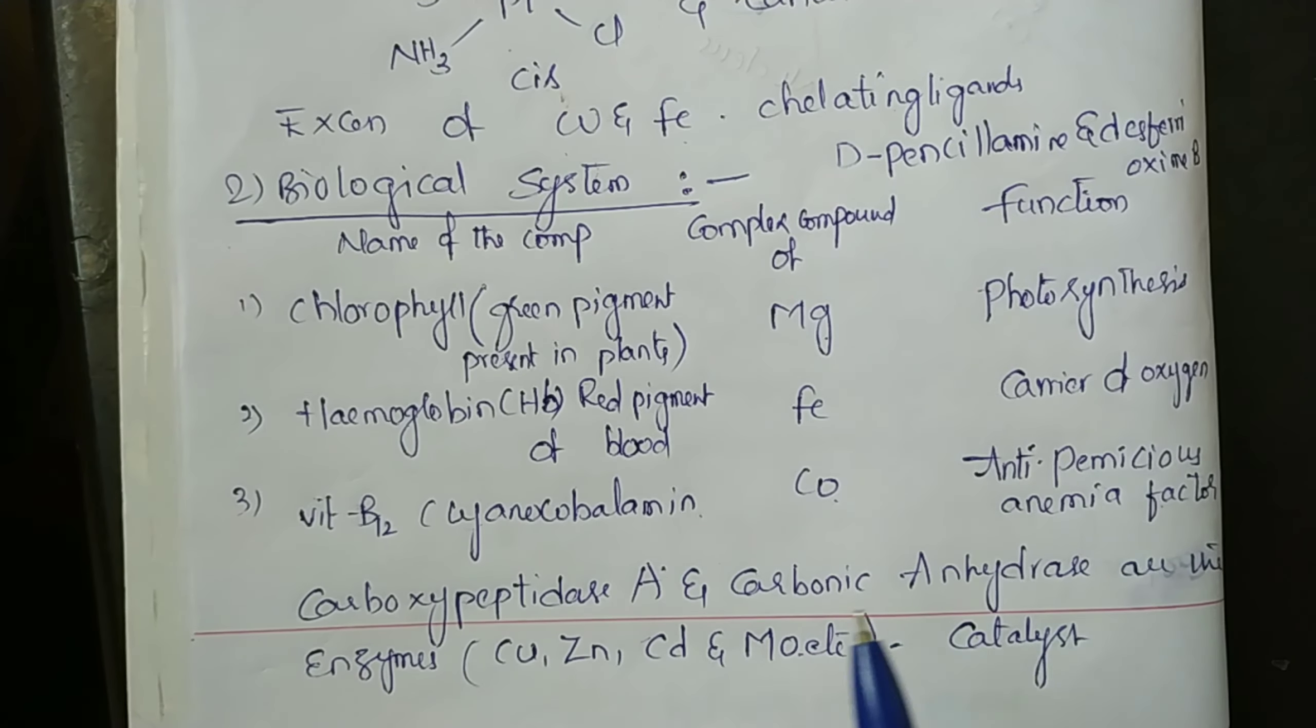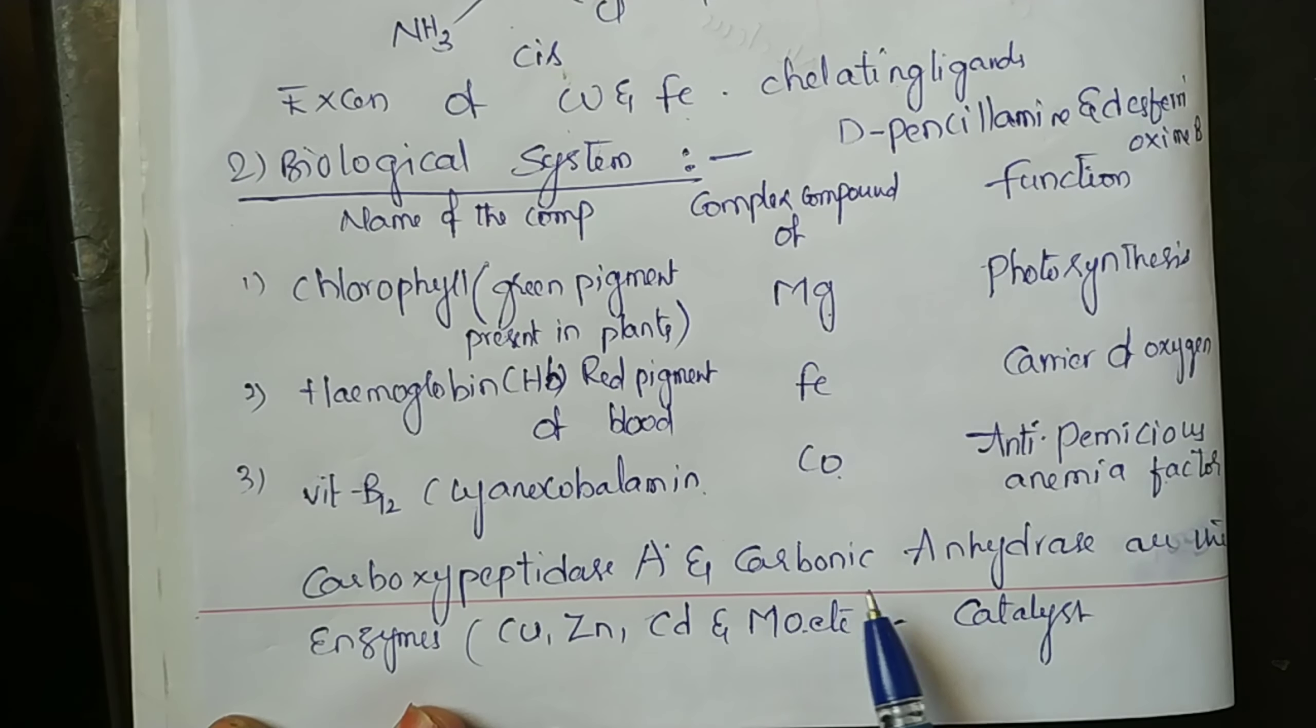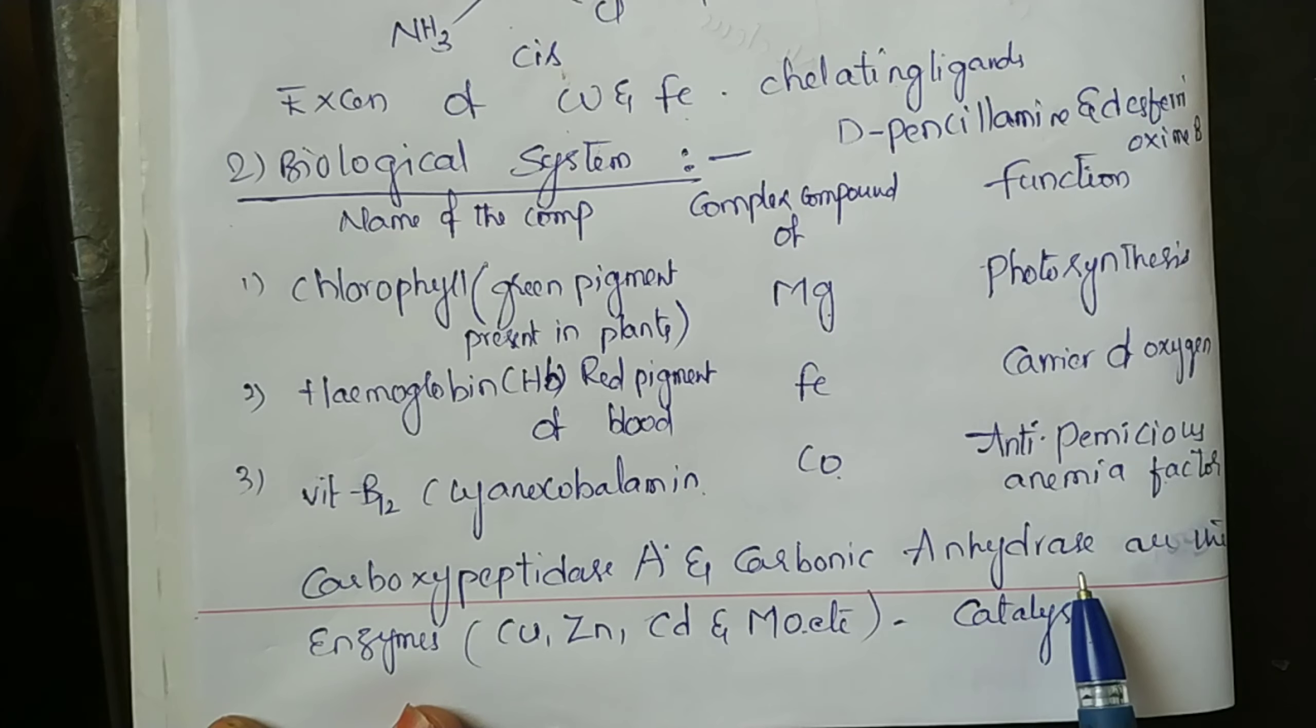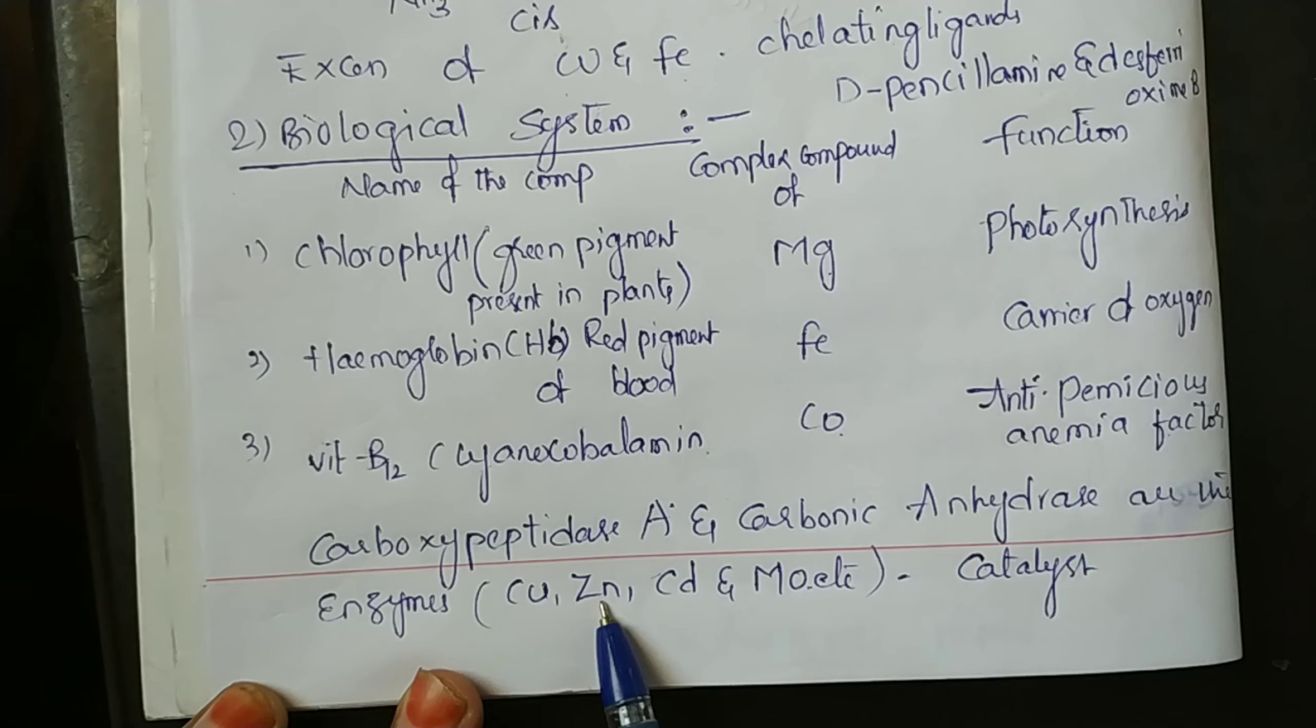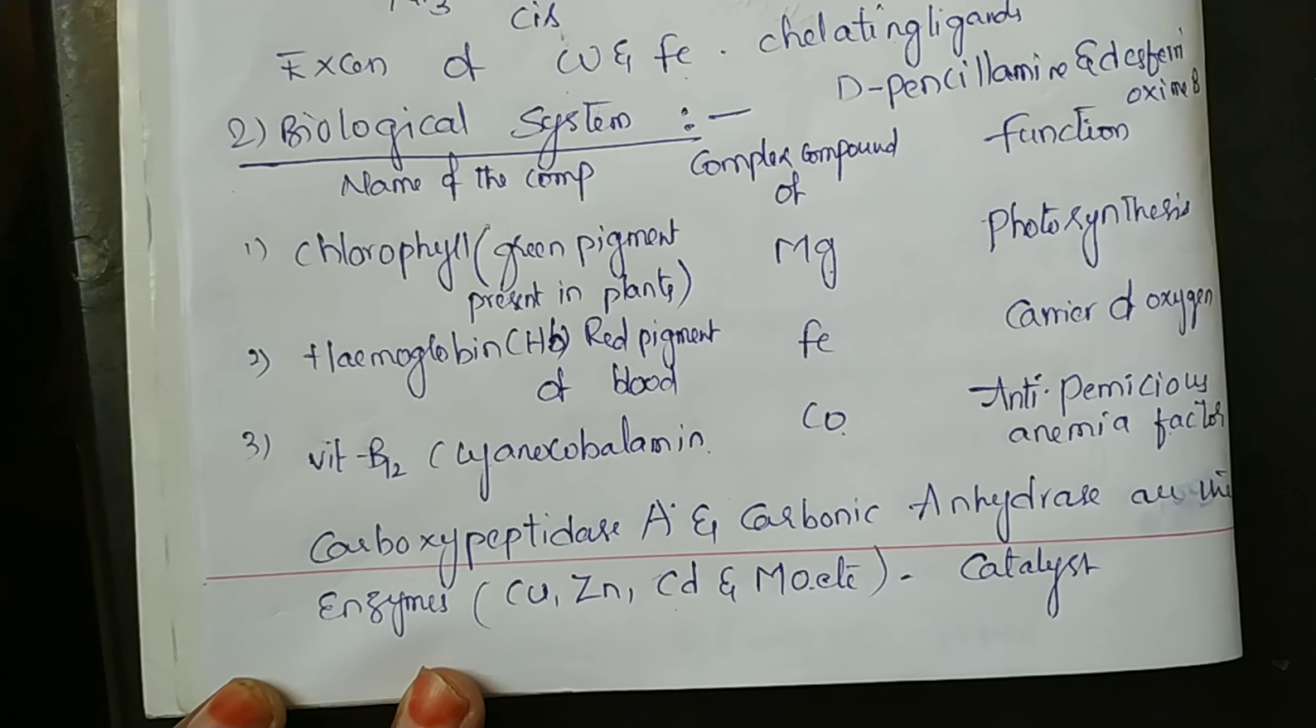Carboxypeptidase A and carbonic anhydrase are enzymes associated with metal ions like copper, zinc, cadmium, and molybdenum. These act as catalysts in biological systems.